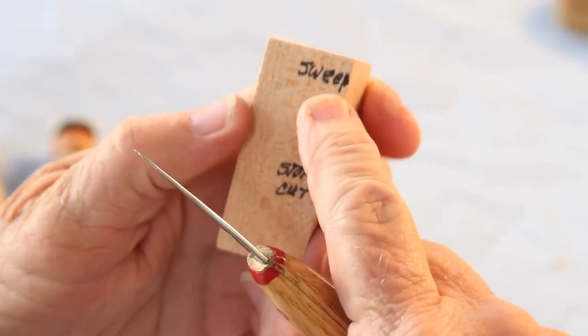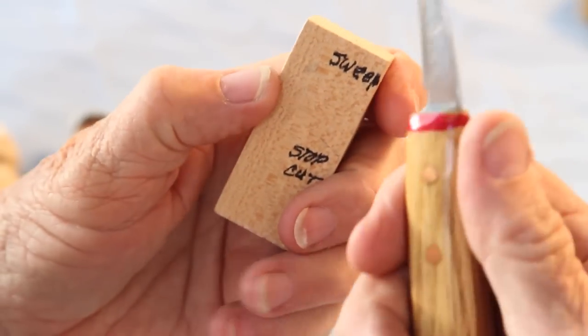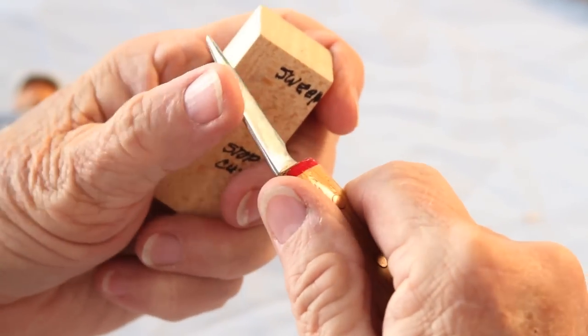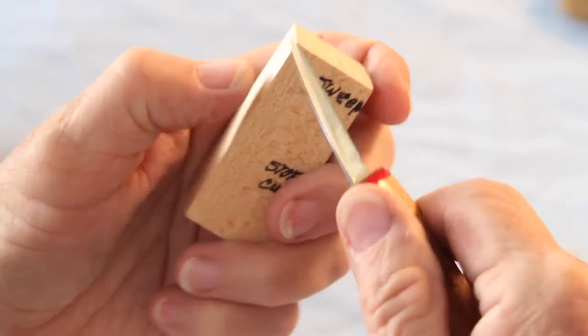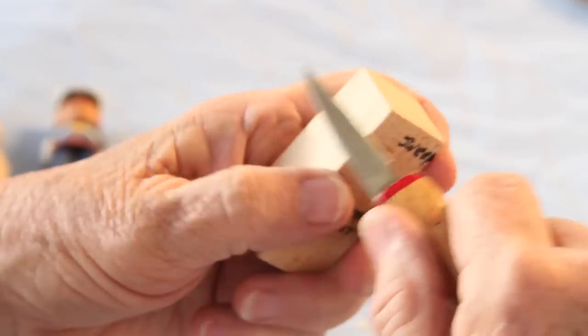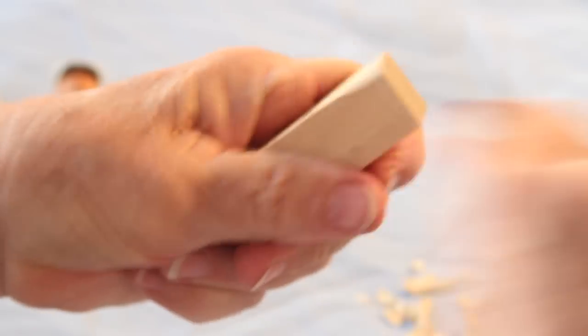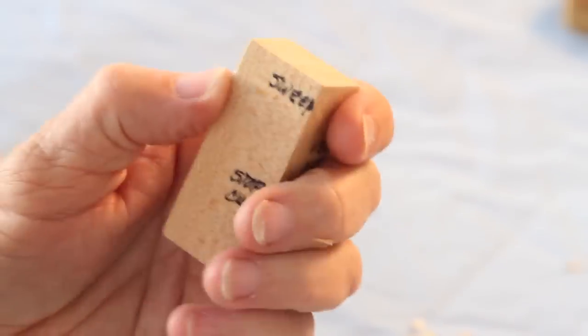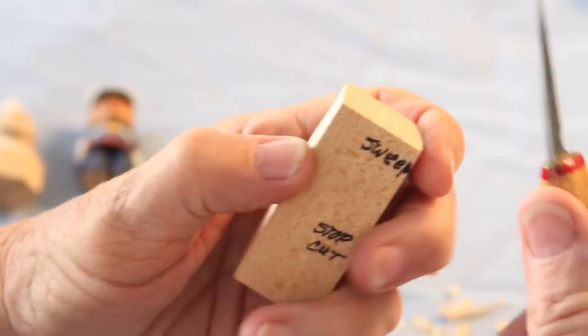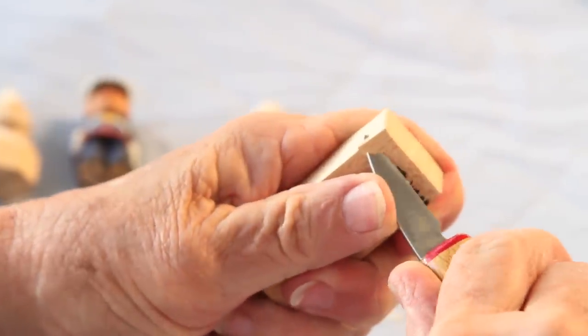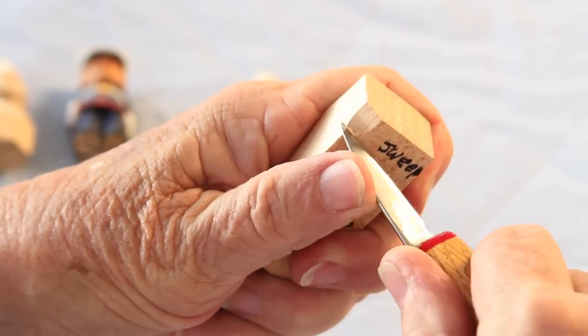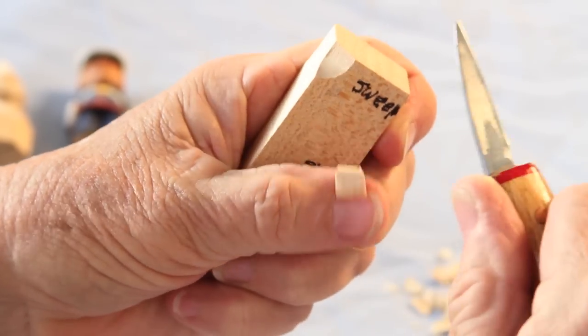This next one is a sweeping cut. The sweeping cut, you use your wrist a lot. I push with my thumb on the edge of my knife to give me more control. It's not a cut like this. You're not sharpening a stick. You're using the control towards the end of your knife, pushing it in and away. See that sweeping cut that it makes?